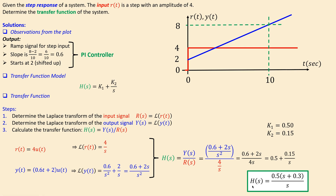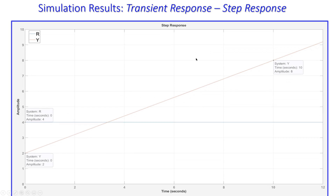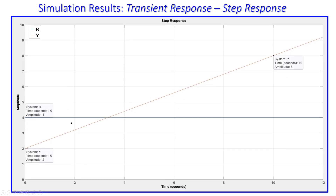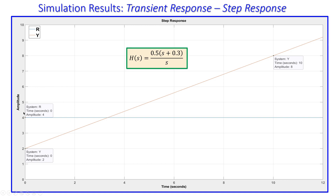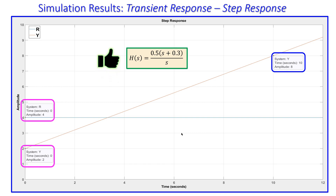Now we check this using simulation. In the step response plot, the input R has an amplitude of 4, shown in red. The output response starts at 2 at time zero and increases linearly — at 10 seconds the value is 8, exactly as expected. The input amplitude stays at 4 throughout. This confirms that the step response from our identified transfer function is correct.